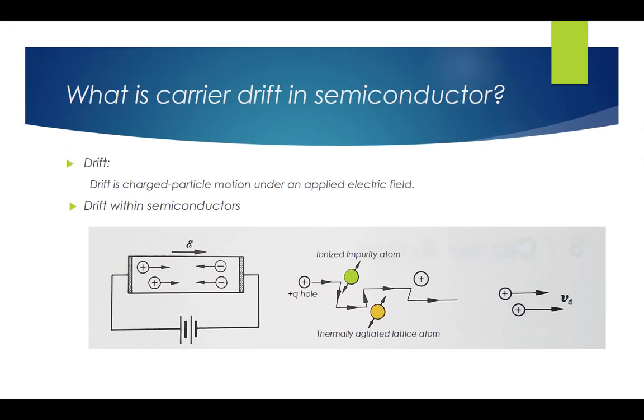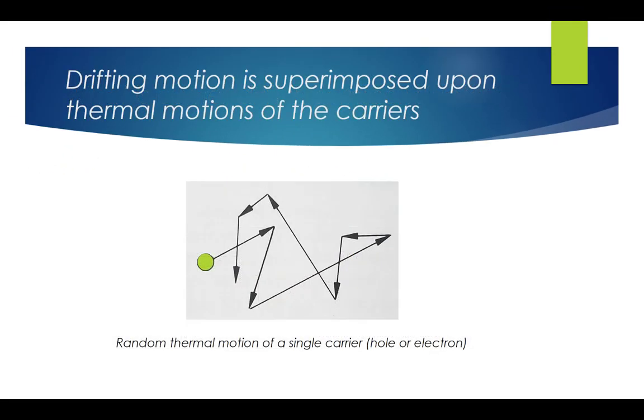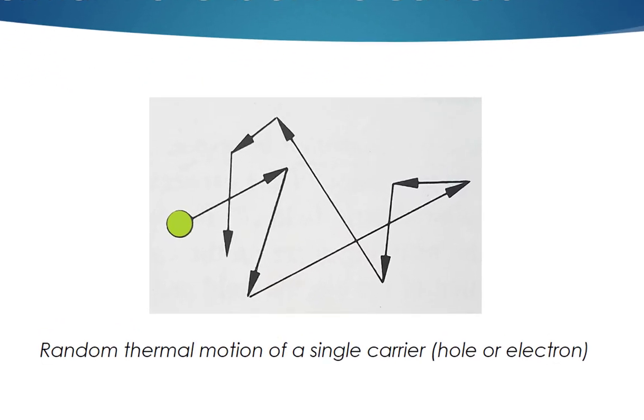However, it is very important for us to point out that the drifting motion of the carriers is actually superimposed upon the always present thermal motion of the carriers. Electrons in the conduction band and holes in the valence band gain and lose energy through collisions with the semiconductor lattice and are nowhere near stationary even under equilibrium conditions. In fact, under equilibrium conditions, the thermally related carrier velocities average about one thousandth of the speed of light even at room temperature. However, the thermal motion of the carriers is completely random. Therefore, the thermal motion averages to zero on a microscopic scale, does not contribute to electric current transport, and can be conceptually neglected.